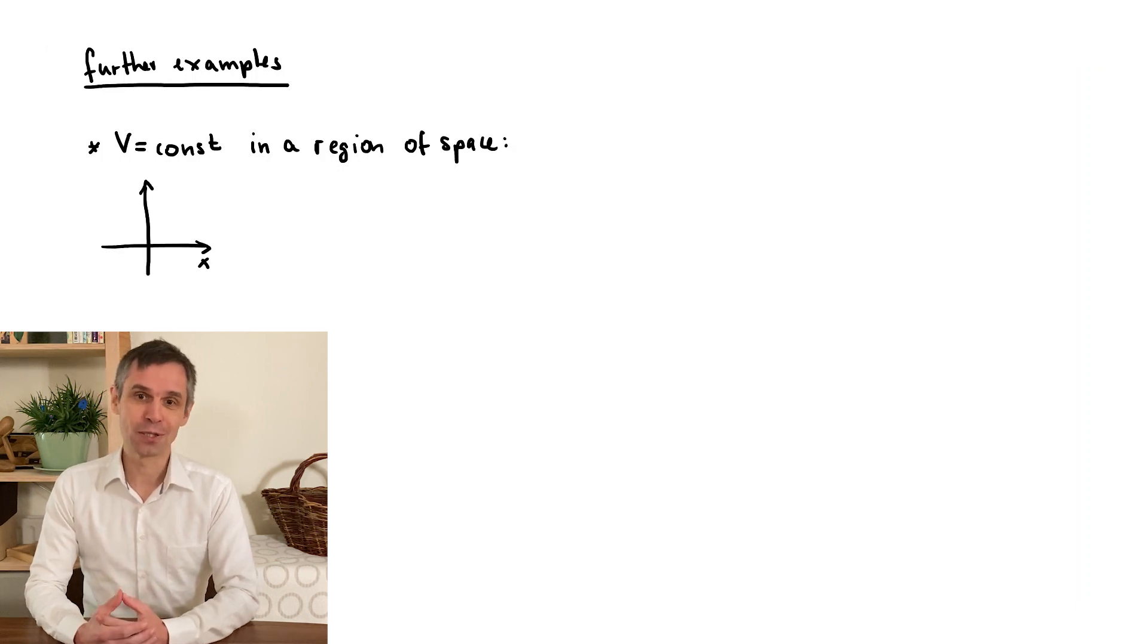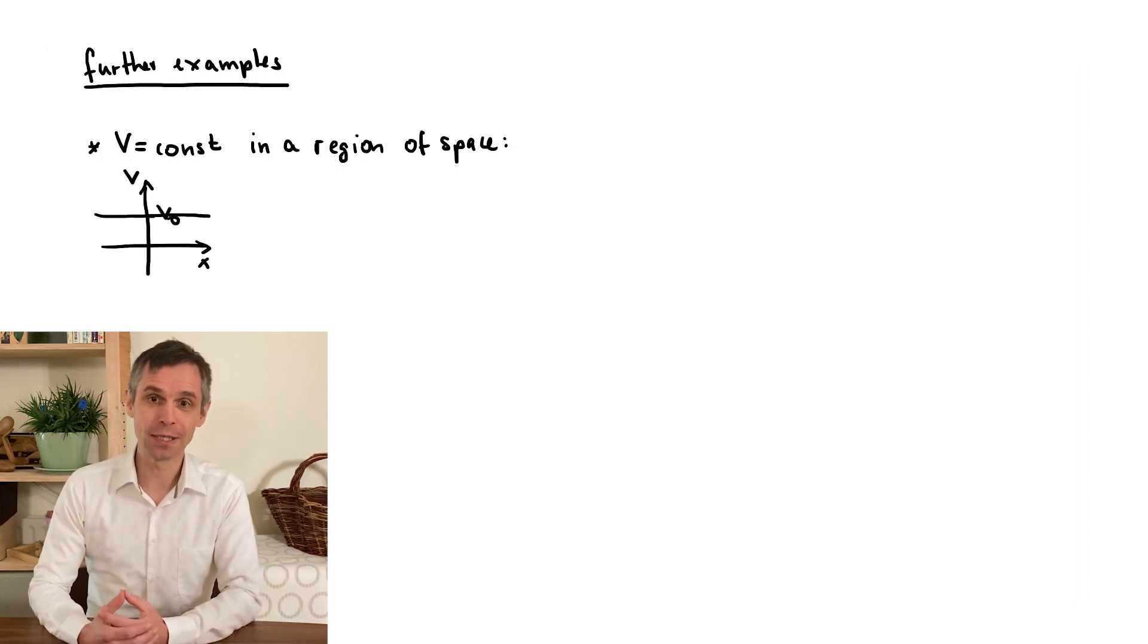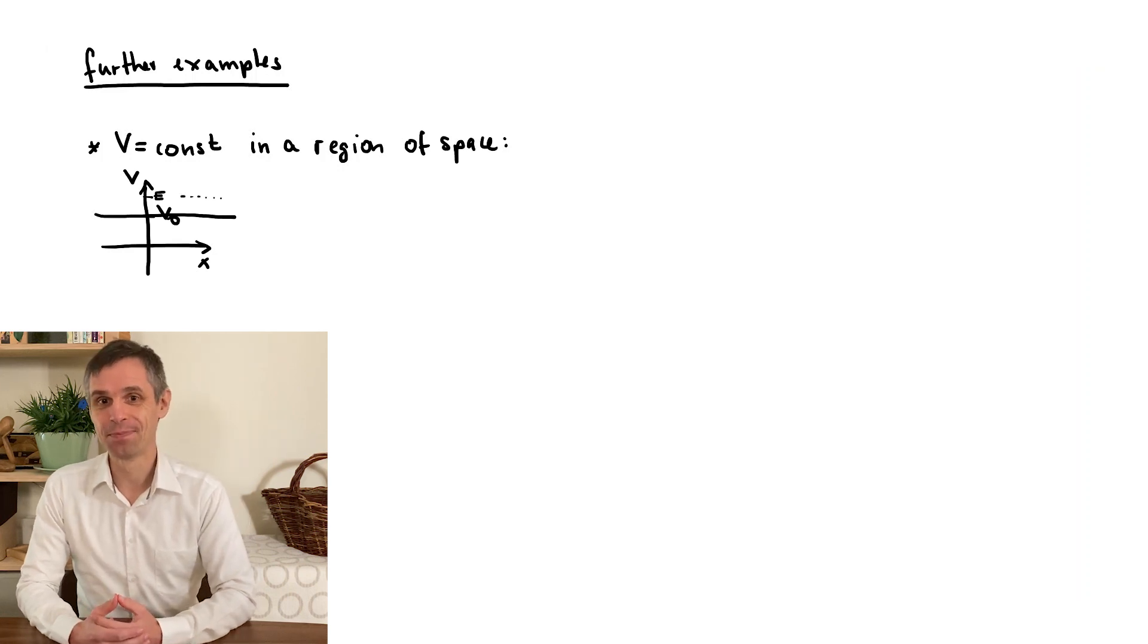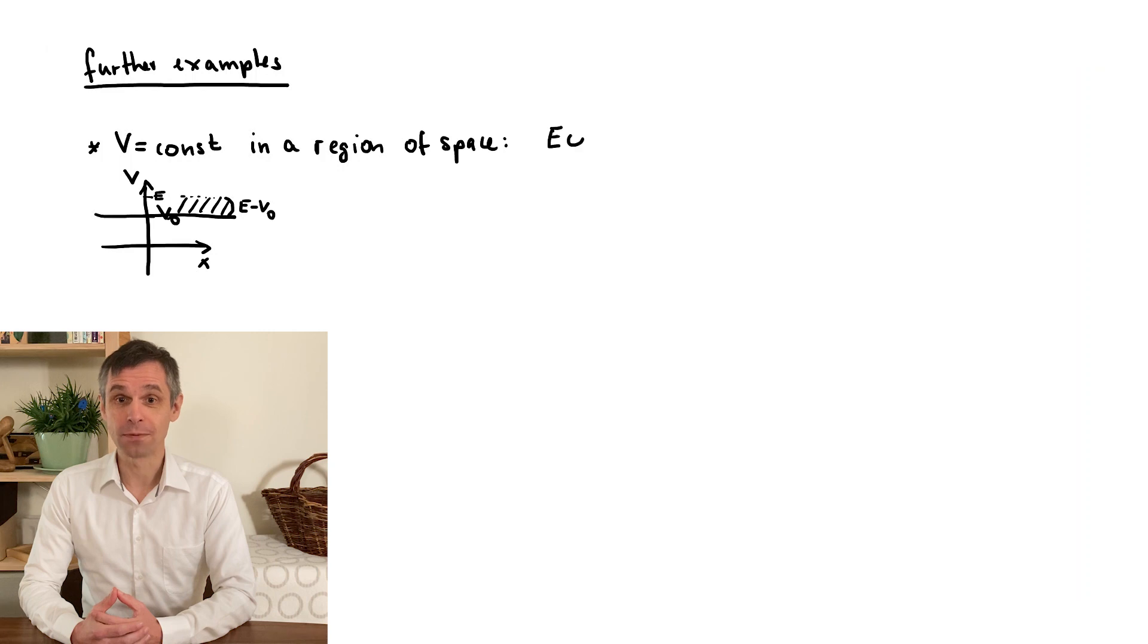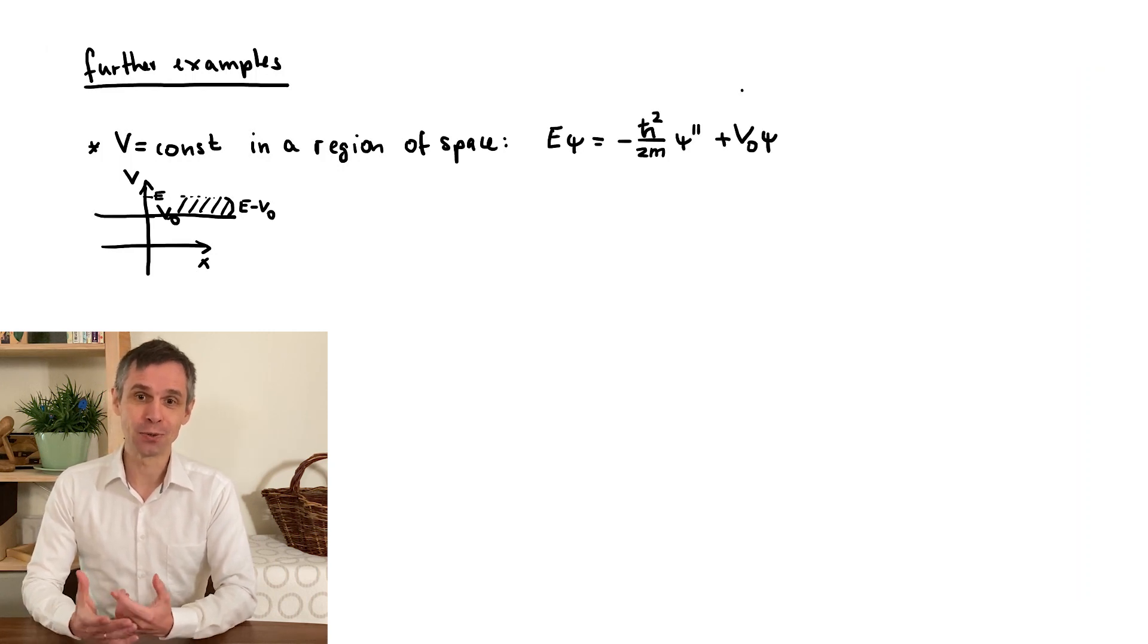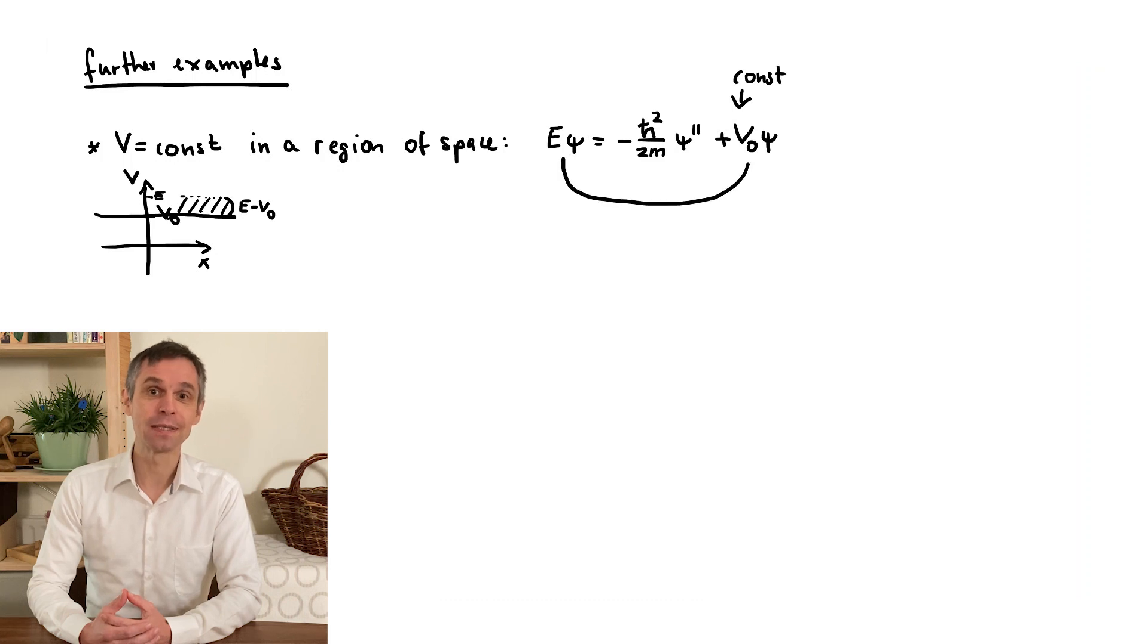Classically, we can then simply subtract this constant potential energy from the total energy to work out the kinetic energy. Quantum mechanically, exactly the same happens when we start from the Schrödinger equation, because we can bring the constant potential onto the other side and then solve this as before.